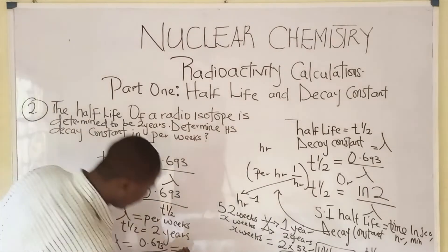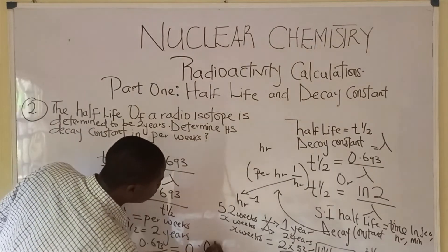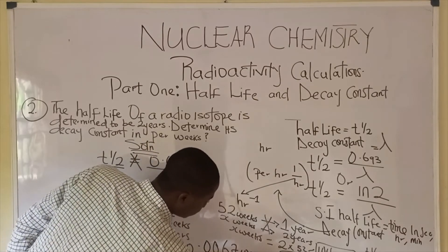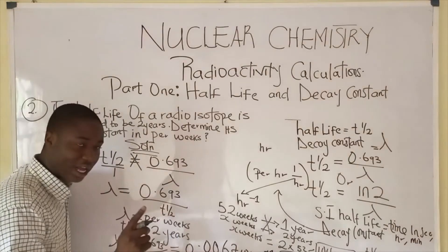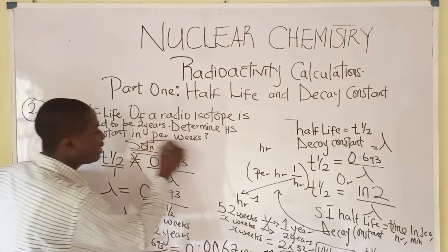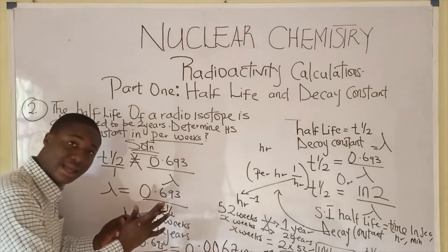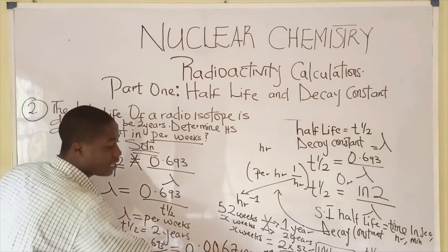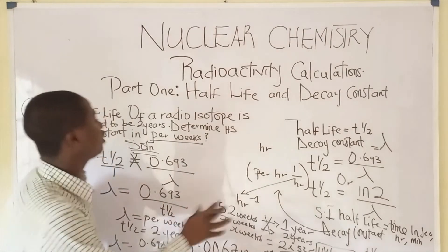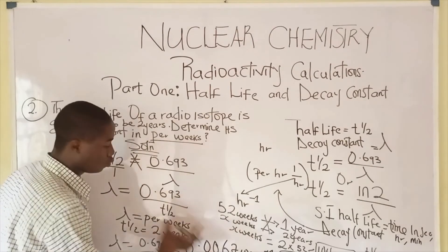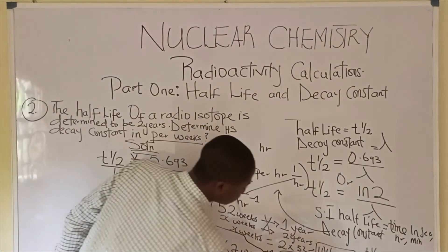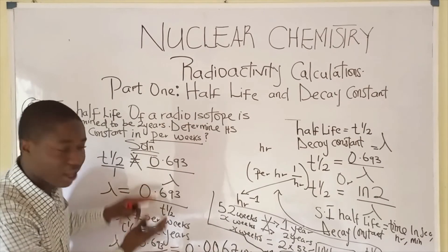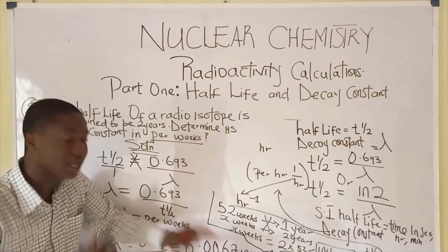So lambda becomes 0.693 over 104 weeks, and when we calculate that we get 0.0067 per weeks, which is weeks raised to the negative 1. The question specified in per weeks, so we had to convert 2 years to 104 weeks. When you solve with 2 years, your answer will be in per years, not per weeks. So we always convert to the required unit before dividing.